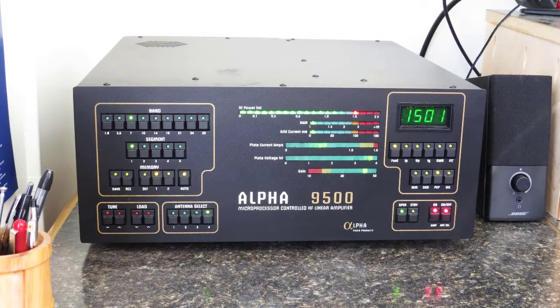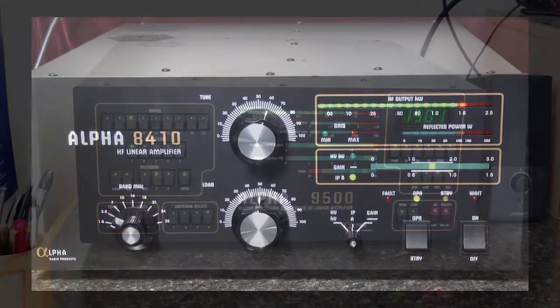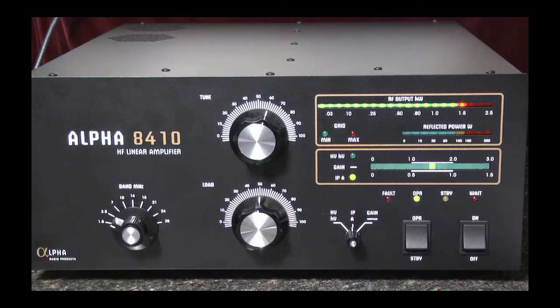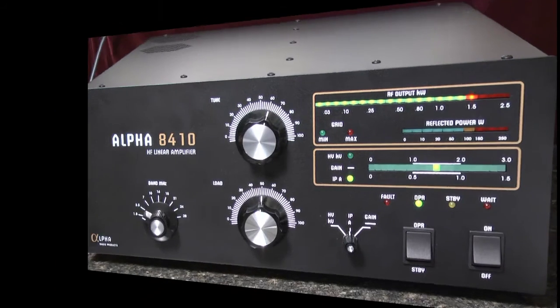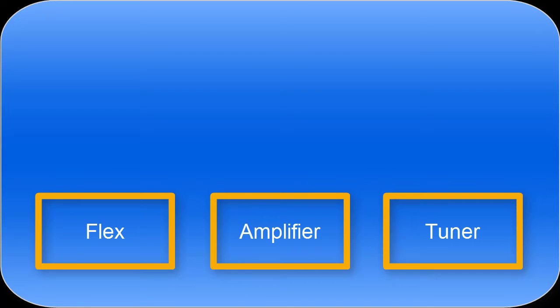We'll also look at the Alpha 8410, which is a manually tuned amplifier. First, let's take a look at how we set up our station. We'll need our radio, the amplifier, a tuner, and finally an antenna.